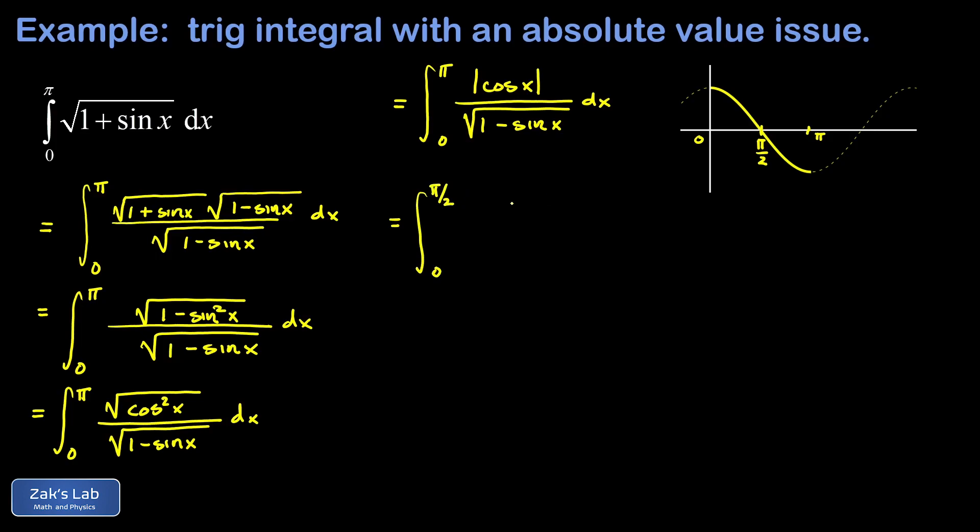Where the cosine function is positive the absolute value does nothing and I get the integral of cosine x over the square root of 1 minus sine x dx.